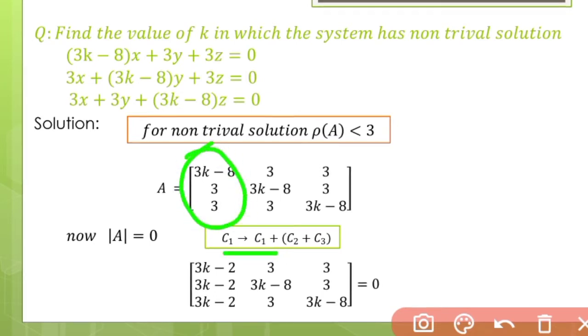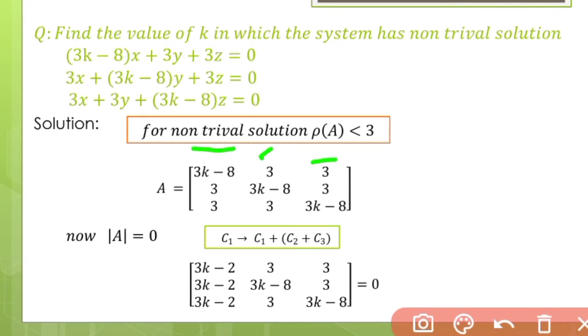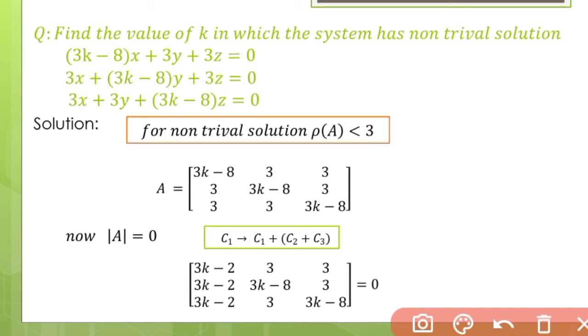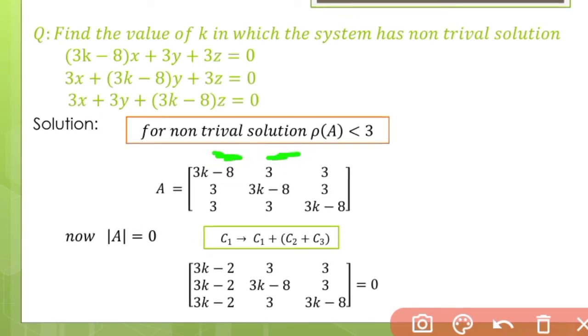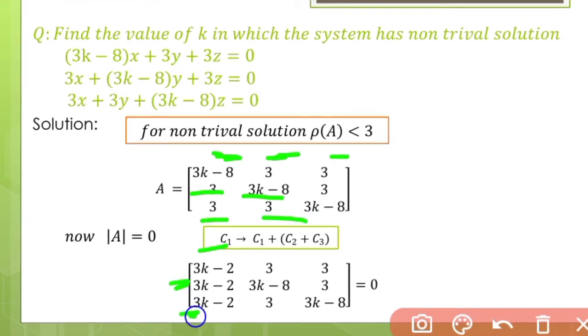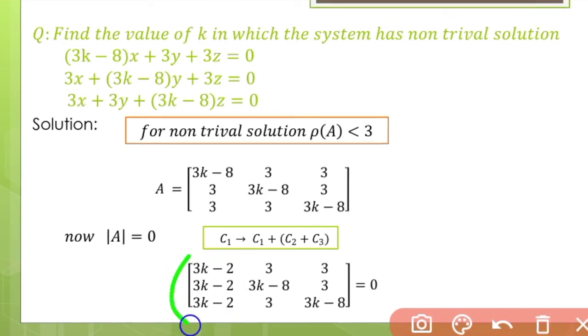We change C1 by adding all three columns. After adding everything, C1 becomes 3k minus 2, 3k minus 2, and 3k minus 2. Since this is the same, C1 can be taken common. So let us take 3k minus 2 common from C1.